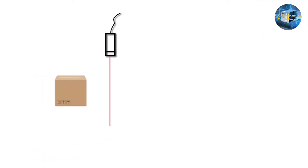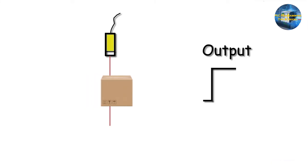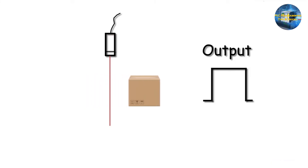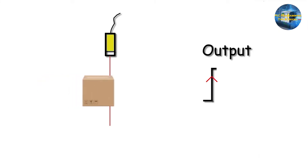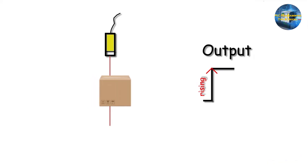Let's see an animation. When a box passes in front of a sensor, the sensor gives an output signal. As the box's front corner just comes in front of the sensor, the sensor output signal turns on. At this moment, the output pulse signal has just turned on — this is called the rising edge of the output signal.